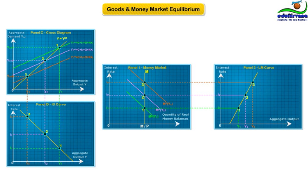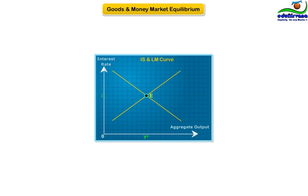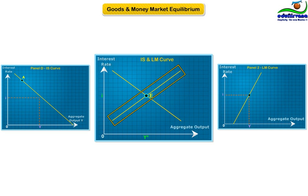An important note: where these two curves meet, we have a situation where the products or services market and the money market are both in equilibrium. At this point, aggregate output equals aggregate demand (IS), and the quantity of money demanded equals the quantity of money supplied (LM).